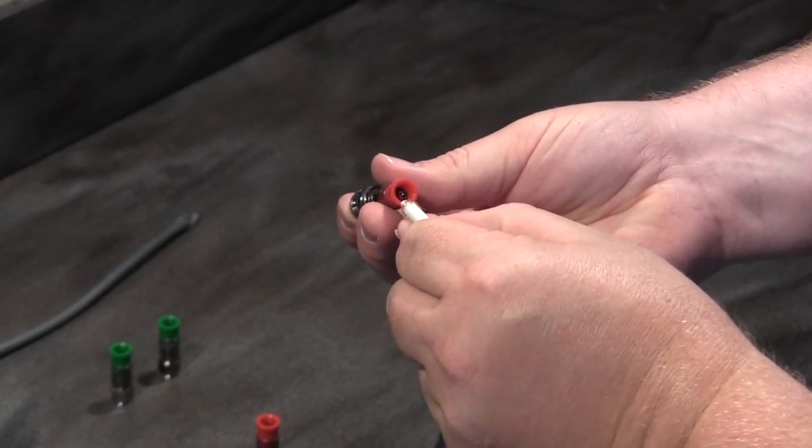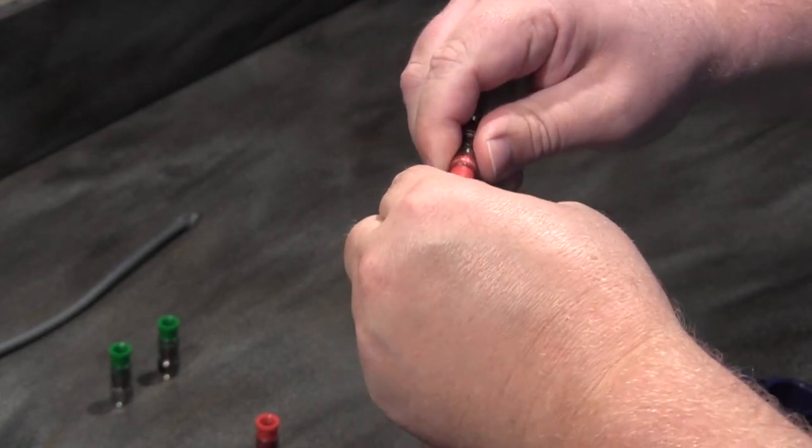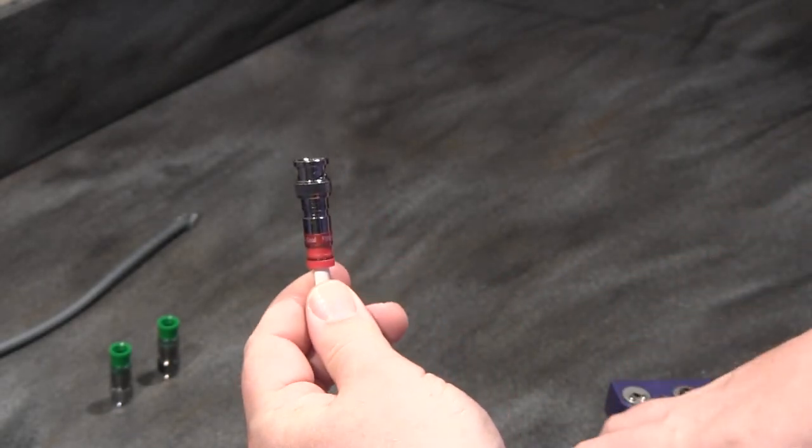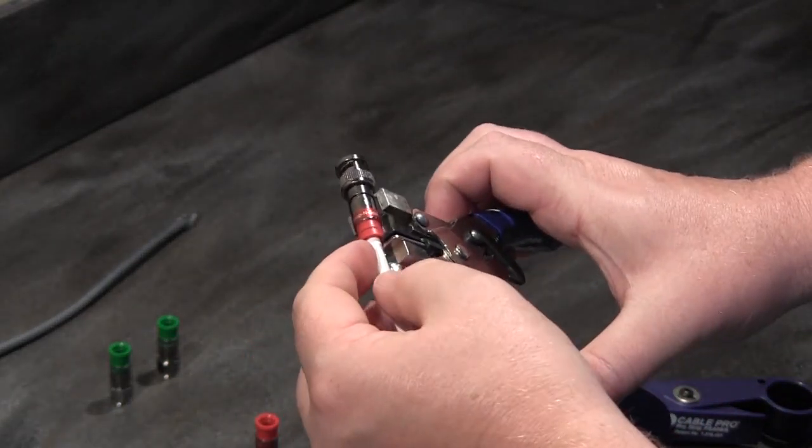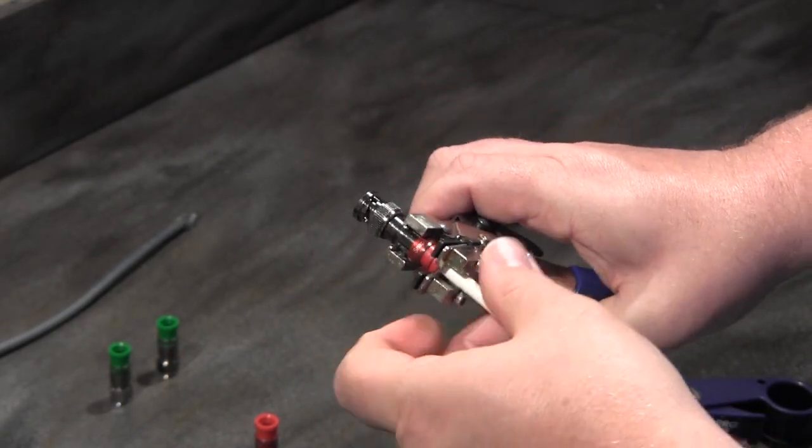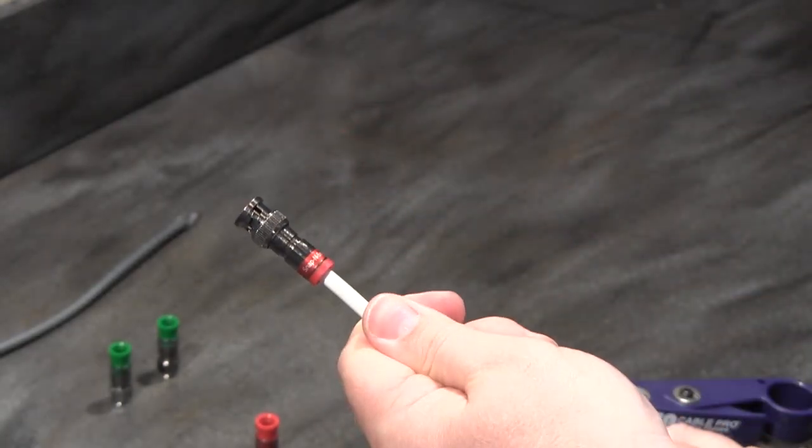So once I take the center conductor, insert it into the back of the connector, I simply push the cable in, and then I'm ready to compress again. Same instructions using the teeth, aligning it with the groove in the body of the connector. I'll compress, and I've got a complete termination.